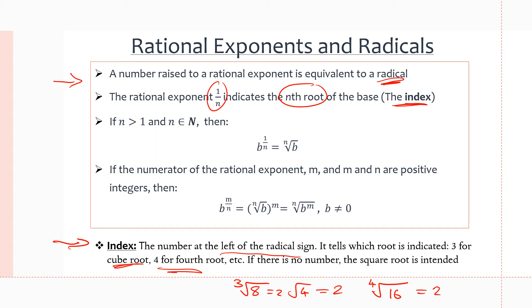Back to the facts: if n is greater than 1 and n is an element of all natural numbers — meaning counting numbers like 1, 2, 3, 4 — we don't want n to be 0 because it would give us a 0 in the denominator of the fraction, resulting in an undefined exponent. So if n is a natural number greater than 1, then b to the power of 1 over n will equal the nth root of that same base b.